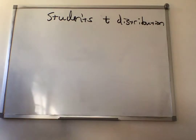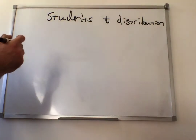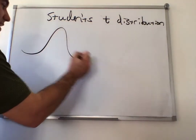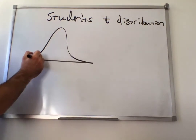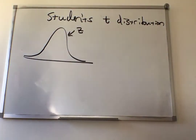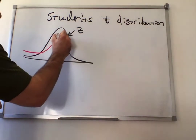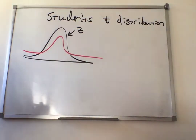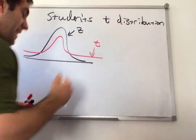The t-distribution is similar to the z-distribution but has more probability in its tails. If the z-distribution comes down more sharply, the t-distribution's tails are fatter and it's not as high in the center. So there's more probability in its tails rather than its hump. This would be the t-distribution compared to the z-distribution.